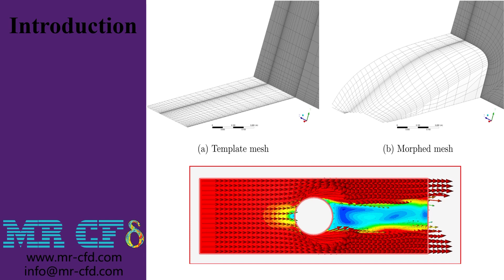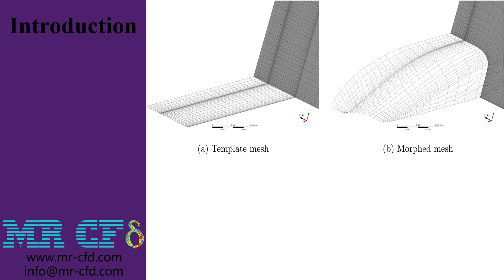But what we are actually going to do here is to do simulation and geometric analysis at the same time. That is, for each simulation performed and according to the goal you set, the software comes and automatically applies the necessary changes to the geometry and finally, according to the goal we set in this problem — which would be reducing the drag force acting on the cylinder — the software reaches the defined goal after going through the necessary process and making the necessary changes on the shape of the cylinder.